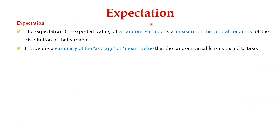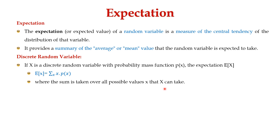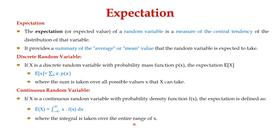Next, let's learn about expectation. The expectation of a random variable is a measure of the central tendency of the distribution of that variable. It provides the average or mean value that the random variable is expected to take. For a discrete random variable with probability mass function P(x), the expectation E(x) is defined as the summation over all x of x dot P(x), where the sum is taken over all possible values x can take. For a continuous random variable with probability density function f(x), the expectation is defined as the integral from minus infinity to infinity of x dot f(x) dx, where the integral is taken over the entire range of x.